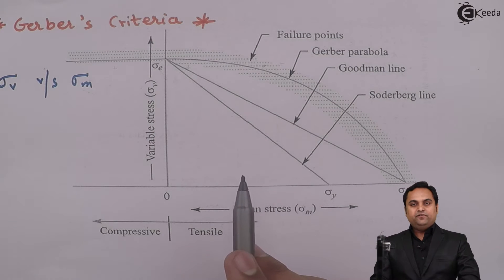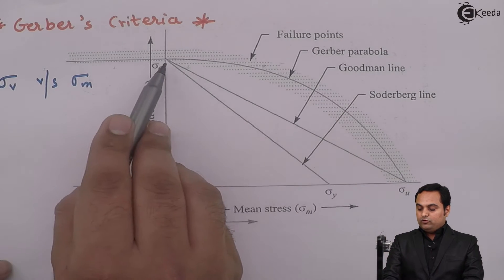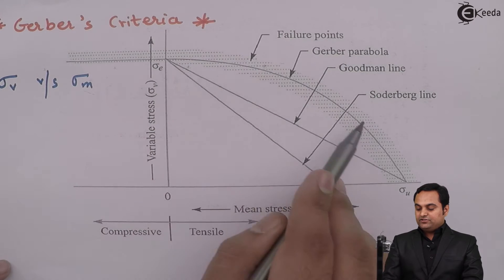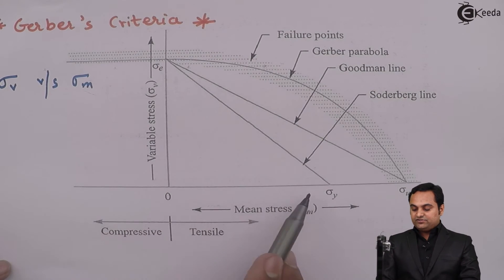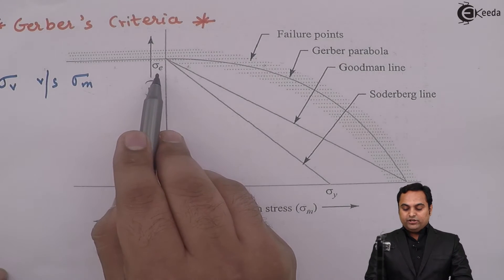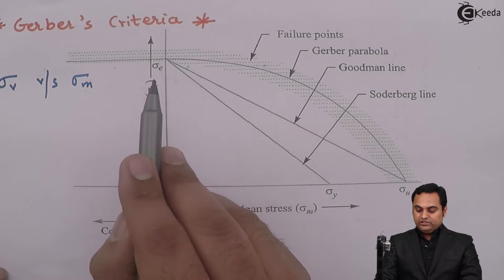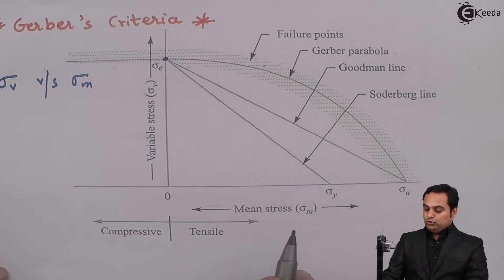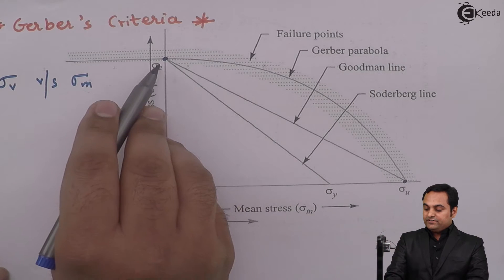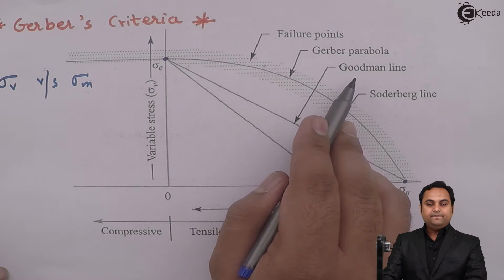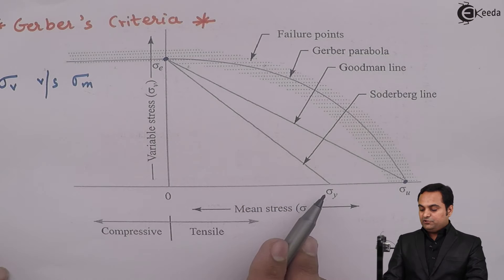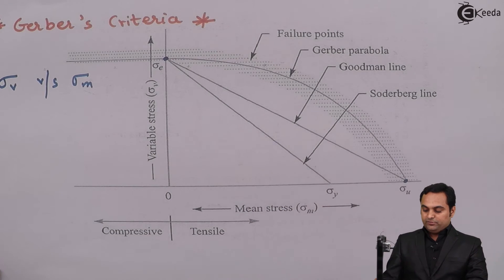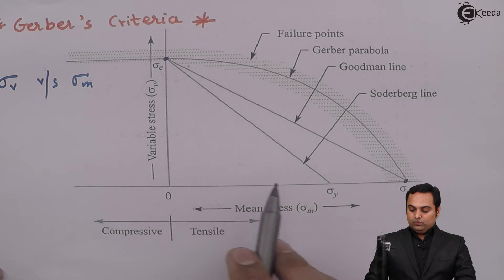Since these points are scattered, we modify the system using the Goodman line and the Soderbergh line, which are straight lines instead of a parabola. If we join the Sigma E value — the endurance stress — to the ultimate stress, that is called the Goodman line. If Sigma E is connected to Sigma Y, the yield stress, that is called the Soderbergh line.